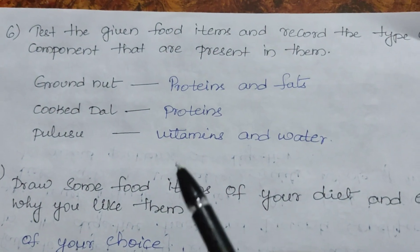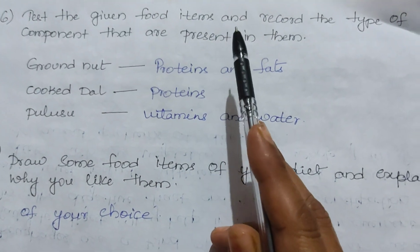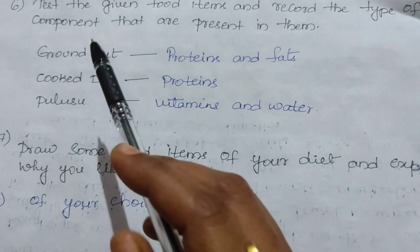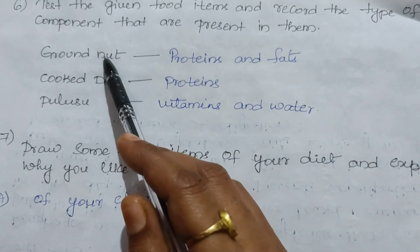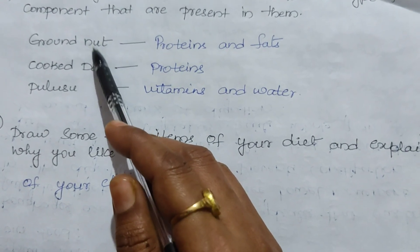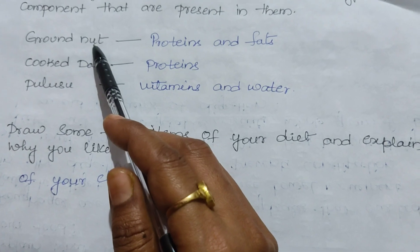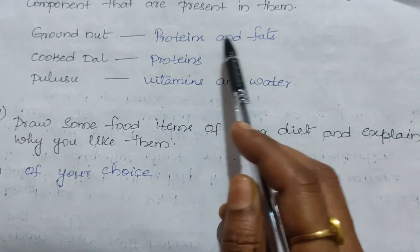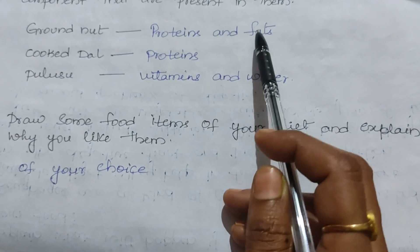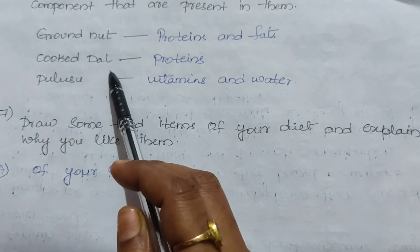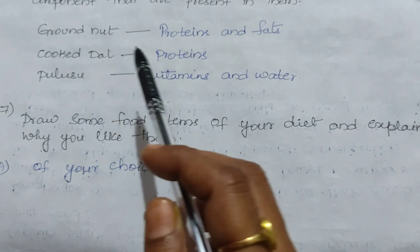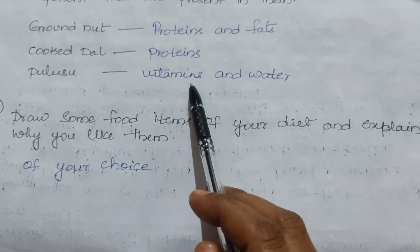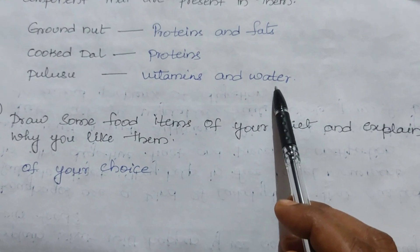The sixth question: test the given food items and record the type of component present in them. Groundnut contains proteins and fats. Cooked dal contains proteins. Pulsu contains vitamins and water.